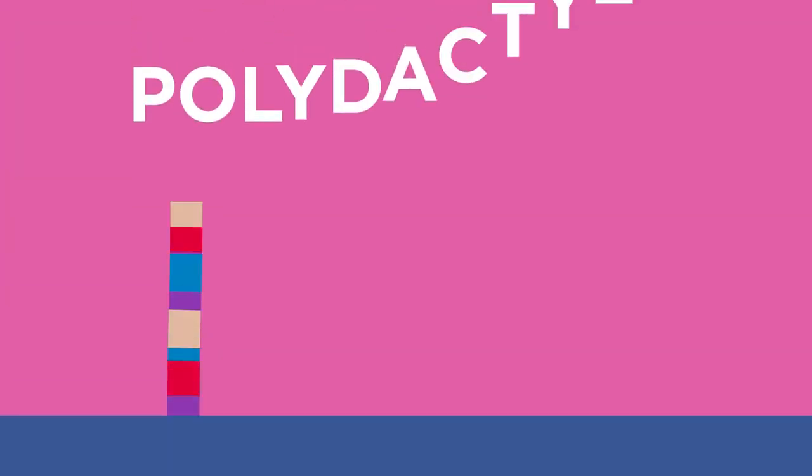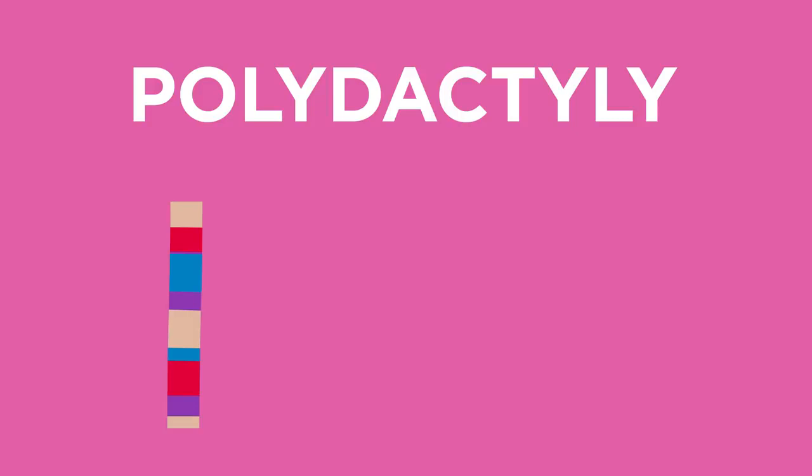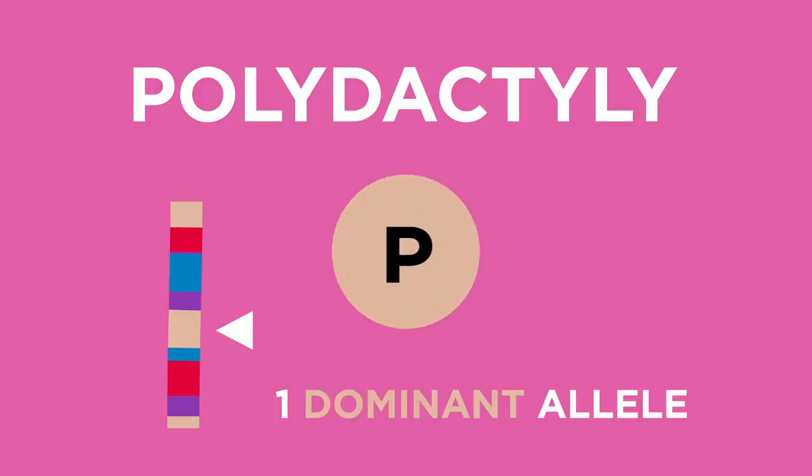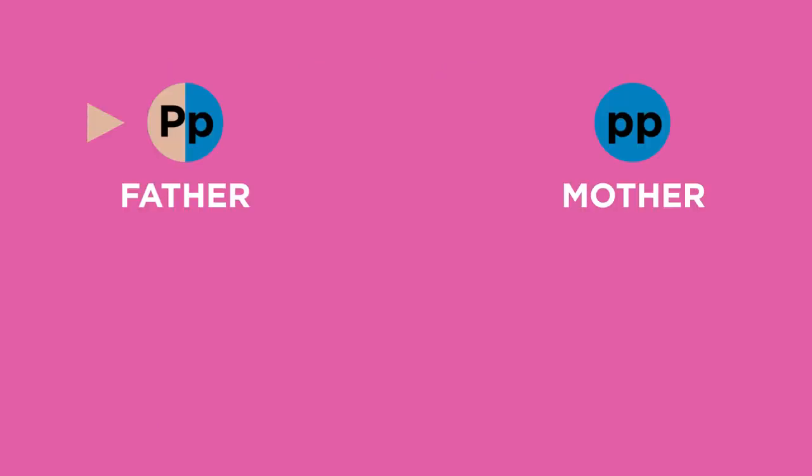So going back to polydactyly. Polydactyly is caused by a dominant allele shown as a capital P. You only have to have one copy of this allele to have the condition.